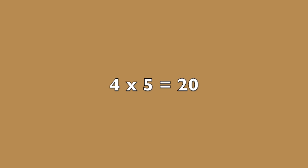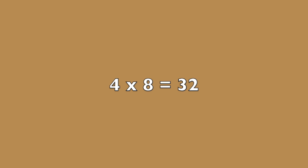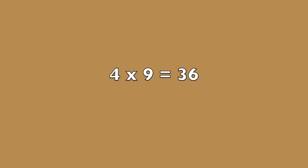Four times five is twenty. Four times six is twenty-four. Four times seven is twenty-eight. Four times eight is thirty-two.